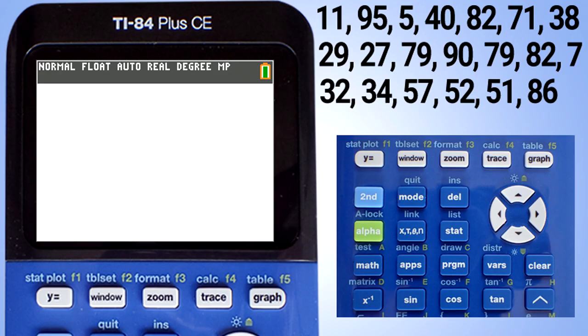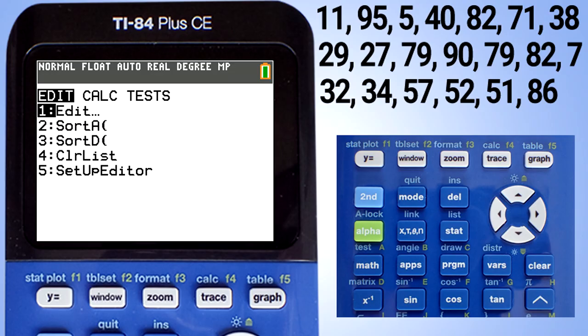We have a set of 20 numbers. Enter your numbers into a list. Press the stat button. This screen pops up. Choose number 1, edit, and press enter.